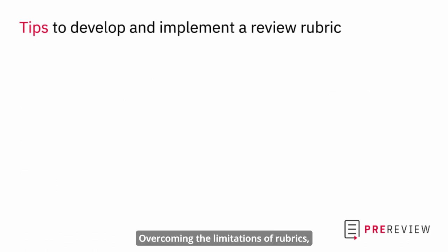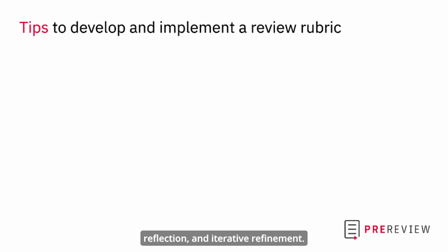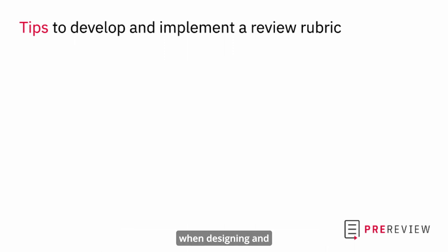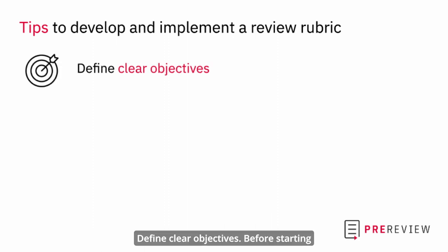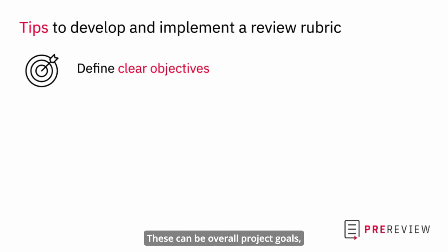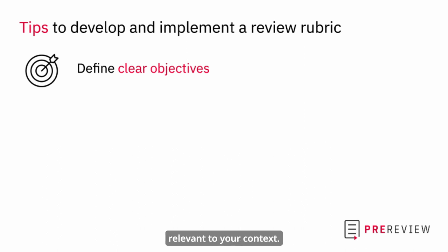Overcoming the limitations of rubrics, especially in the context of grant review, requires thoughtful design, regular reflection, and iterative refinement. Here are some recommendations to consider when designing and implementing a review rubric. First, define clear objectives: before starting with the rubric, clarify what you intend to assess. These can be overall project goals, specific competencies, or other criteria relevant to your context.